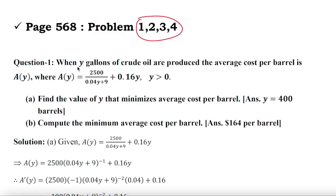In this video I want to solve four problems, and these problems are very important. Let us solve the first problem: when y gallons of crude oil are produced, the average cost per barrel is given by this function. It is the average cost function per barrel. Find the value of y that minimizes the average cost per barrel and compute the minimum average cost per barrel.